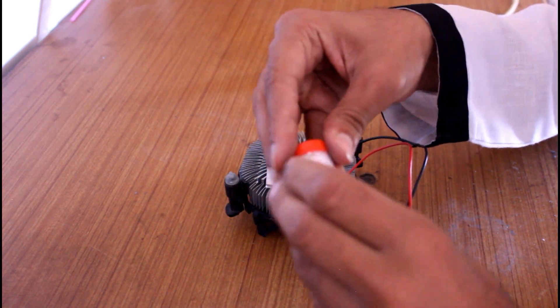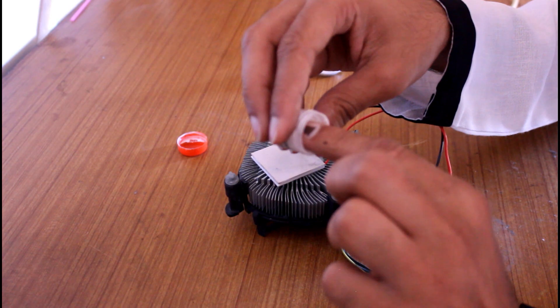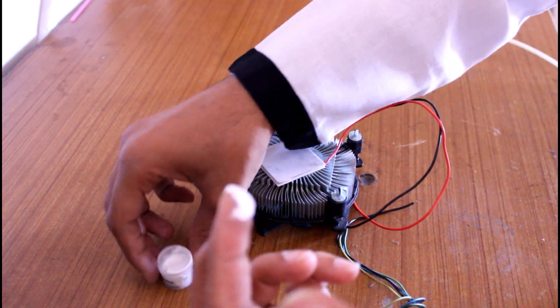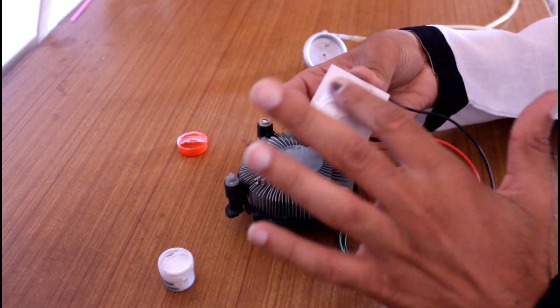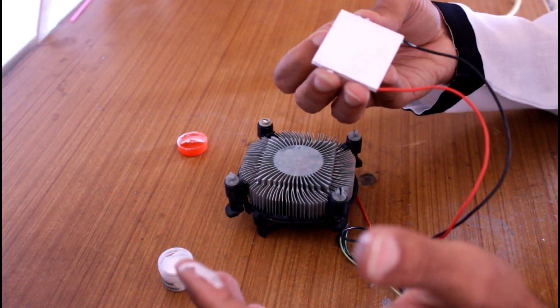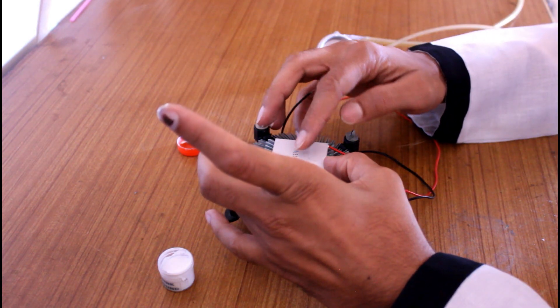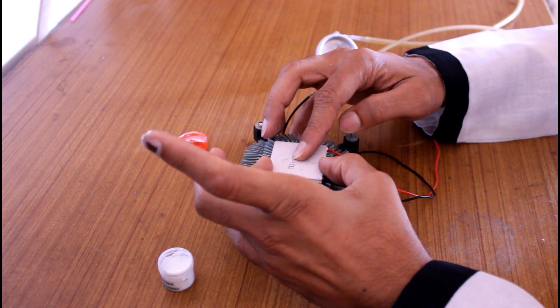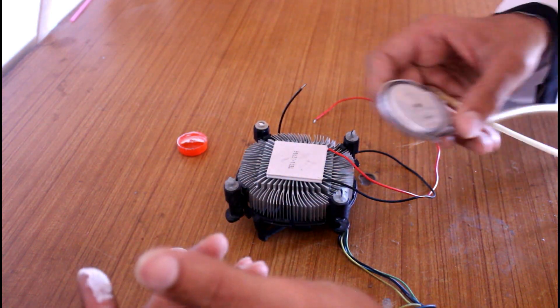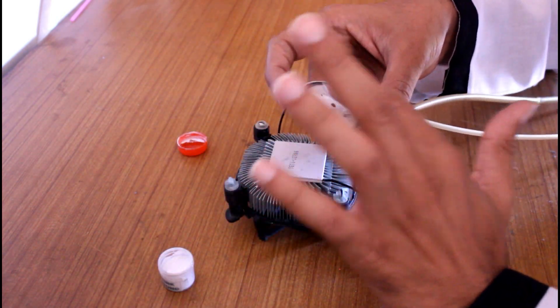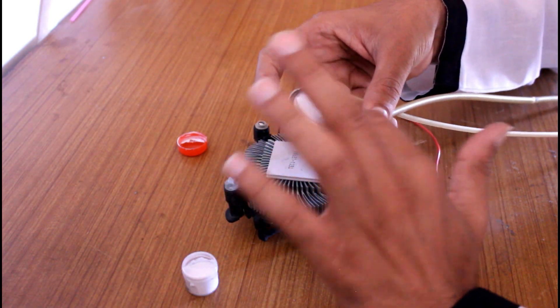Now I will put this sink on this cooling system. Before that, we have to put a Peltier module in between them. But before that, I will apply some heat sink compound for proper heat sinking. We will apply on both sides for better sinking.